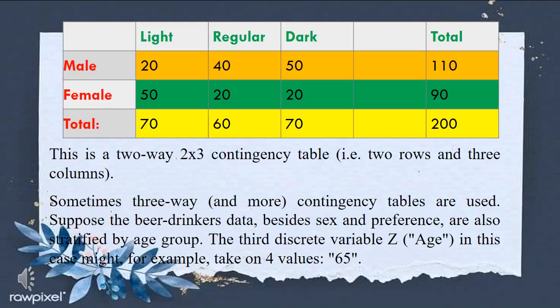The table shows X and Y, where X contains male and female, and Y contains the categories light, regular, dark, and the total. For male: 20 light, 40 regular, 50 dark — a total of 110. For female: 50 light, 20 regular, 20 dark — a total of 90. The column totals are: light 70, regular 60, dark 70, with a grand total of 200.